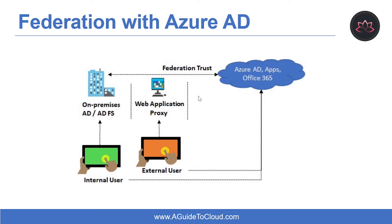Federation with Azure AD: federation is a collection of domains that have established trust. The level of trust may vary but typically includes authentication and almost always includes authorization. You can federate your on-premises environment with Azure AD and use this federation for authentication and authorization. This sign-in method ensures that all user authentication occurs on-premises, allowing administrators to implement more rigorous access control. Note that if you use federation with Active Directory Federation Services (ADFS), you can optionally set up Password Hash Synchronization as a backup in case your ADFS infrastructure fails.